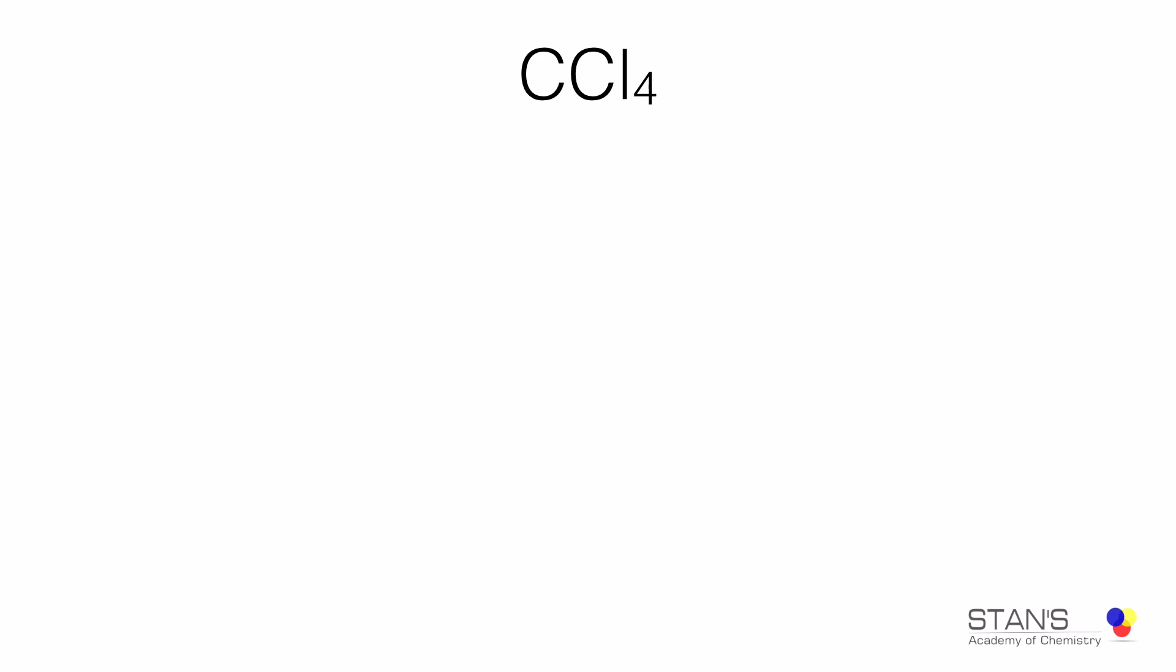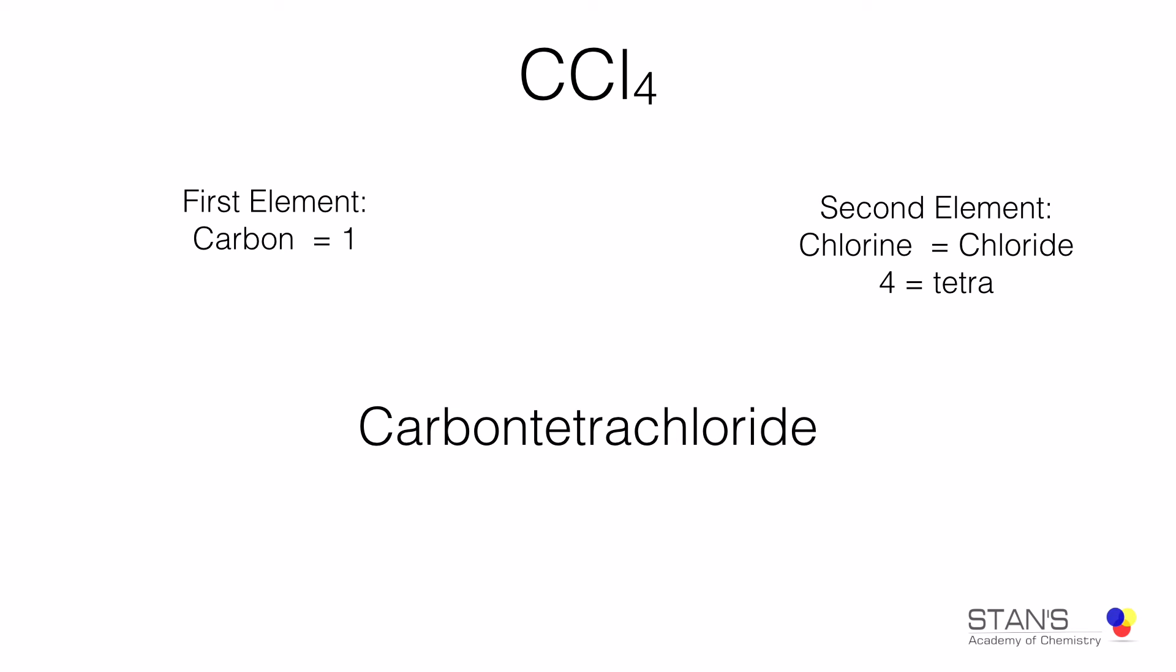In this example we have one carbon and four chlorine atoms. Four is tetra and chlorine is more electronegative, therefore it is chloride. The final name of the compound would be carbon tetrachloride.